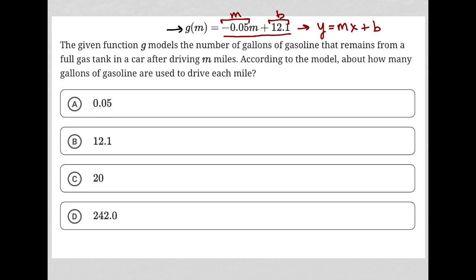But let's read the question to see exactly what we are being asked to find here. The given function g models the number of gallons of gasoline that remains from a full gas tank in a car after driving m miles. According to the model, about how many gallons of gasoline are used to drive each mile?